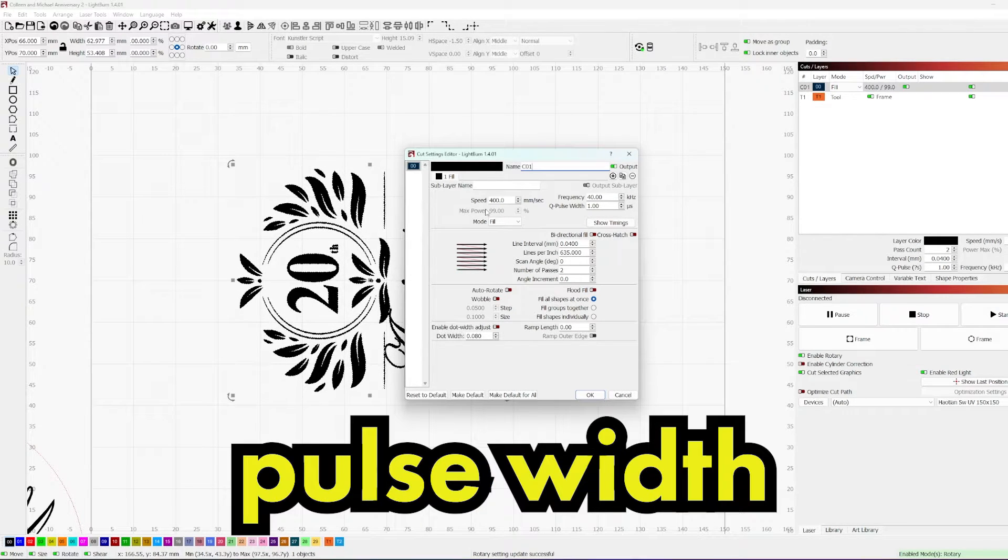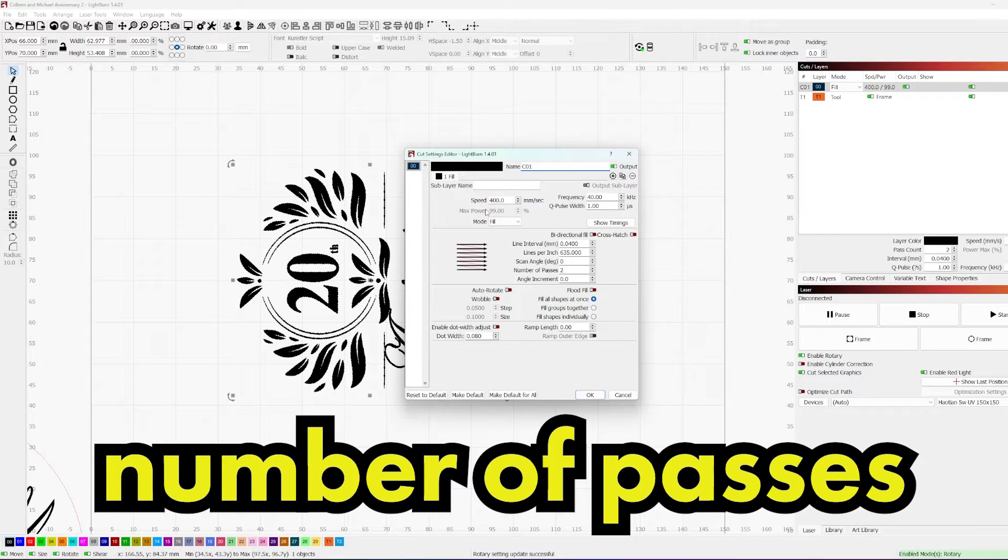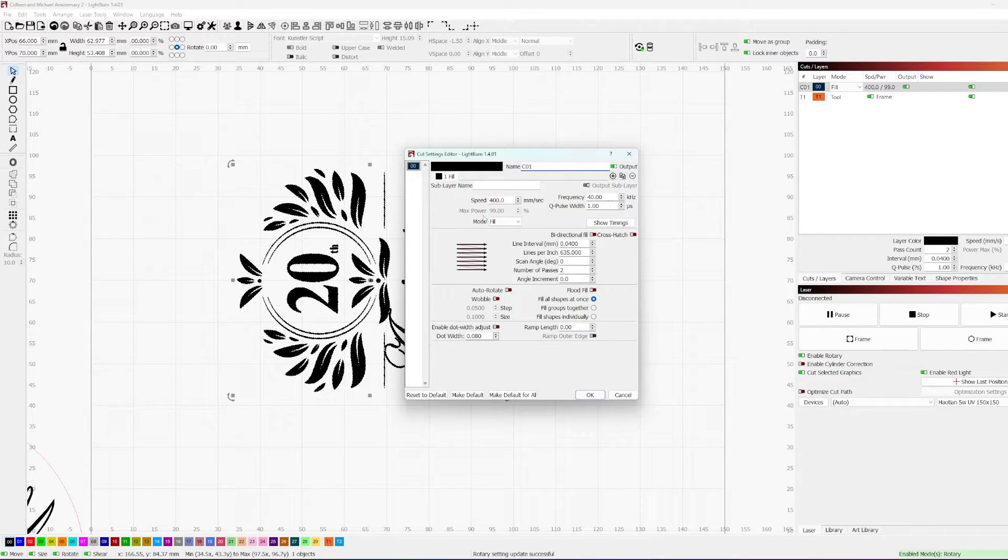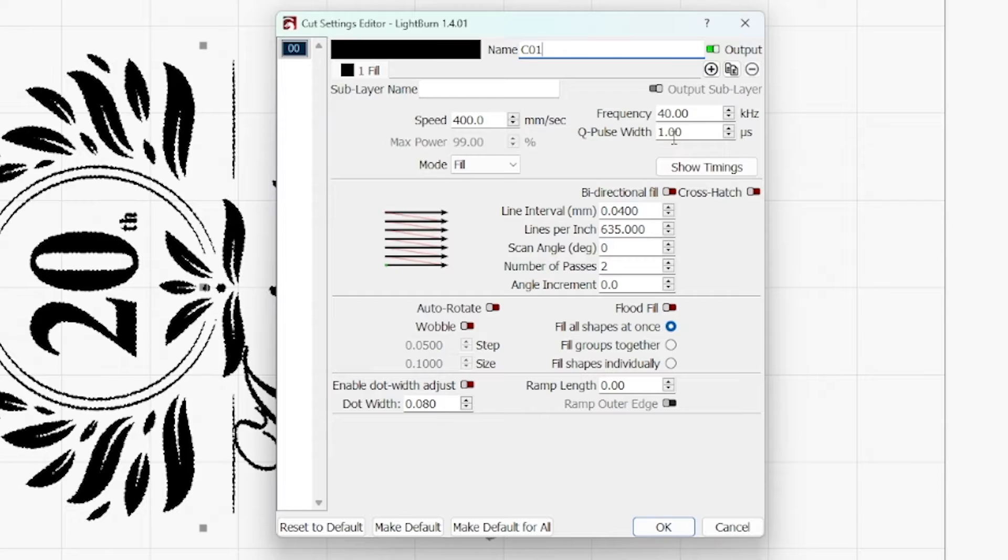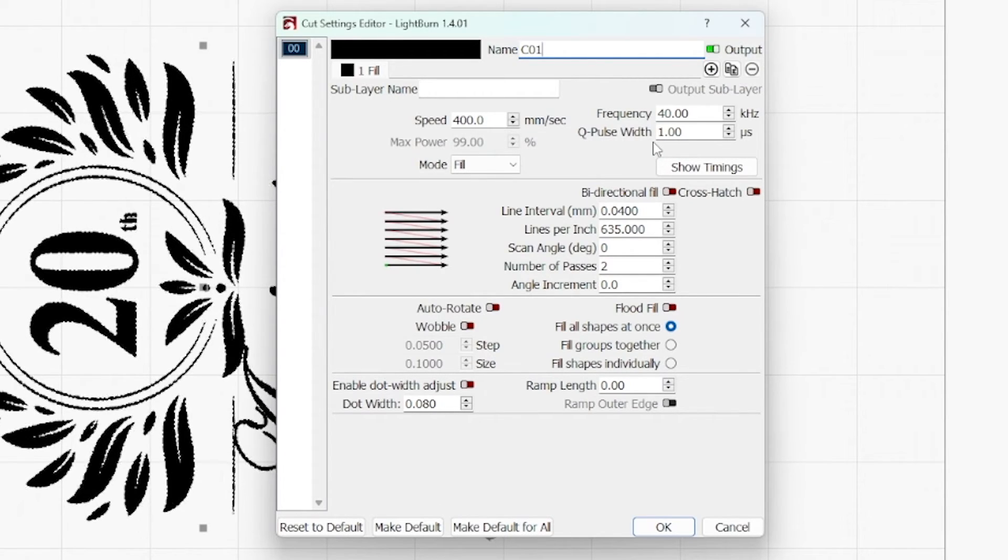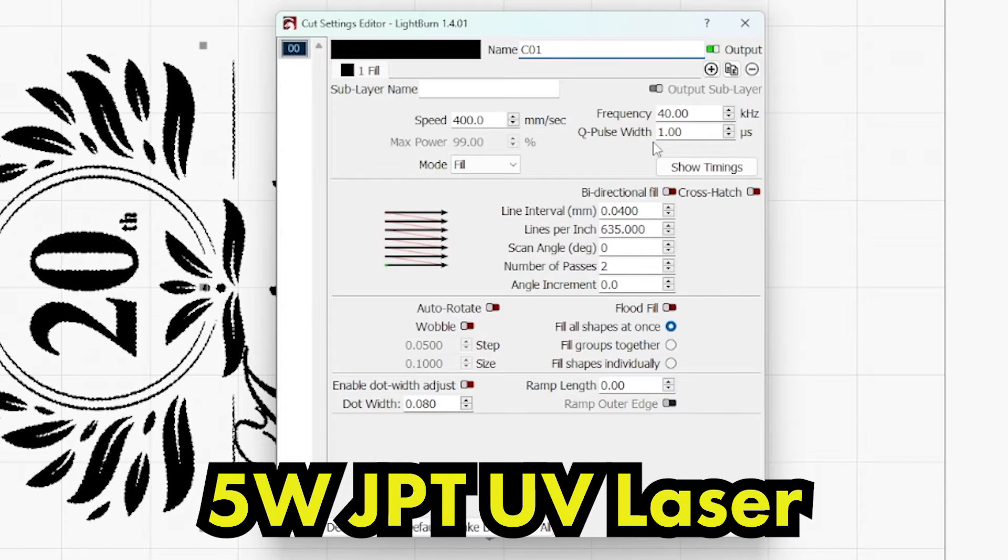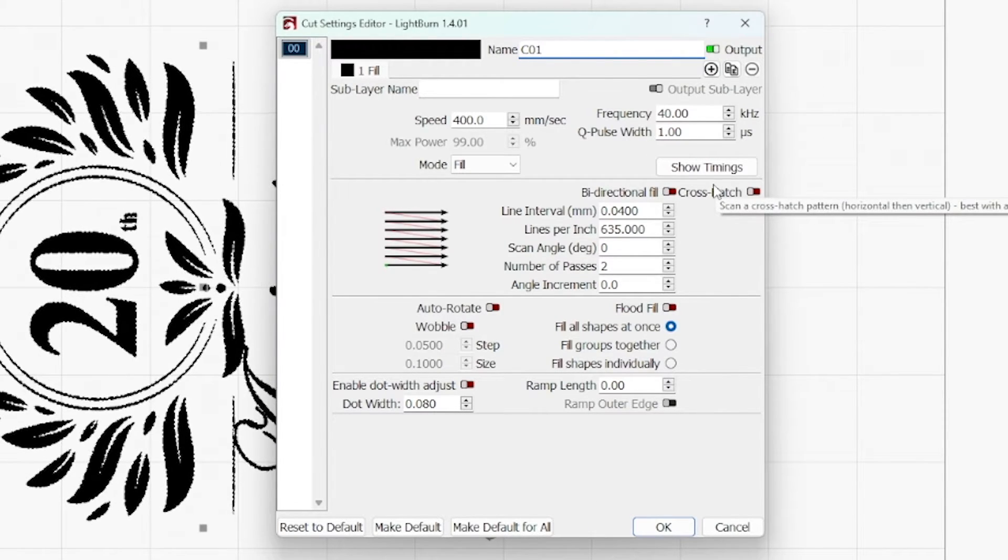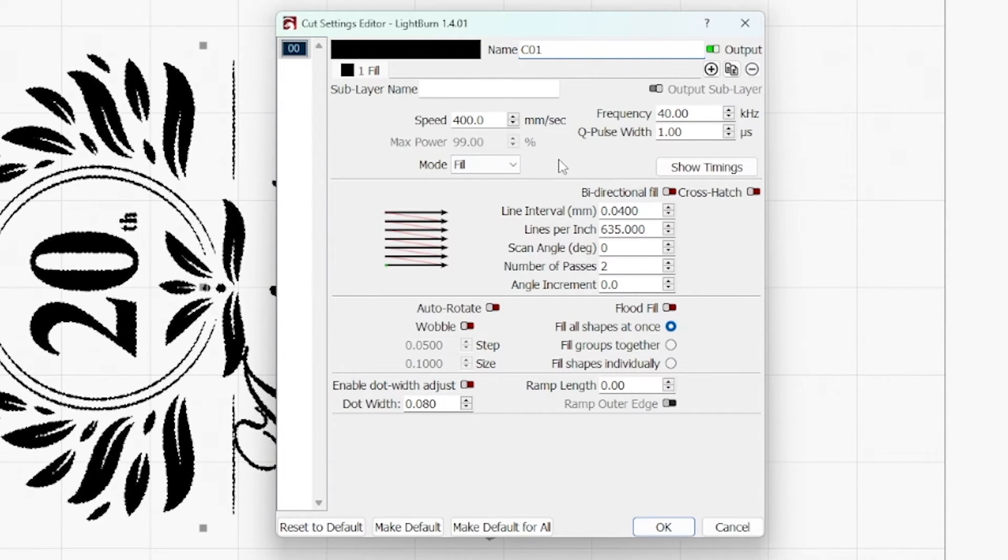It's all about speed, frequency, pulse width, your line interval, how many passes you're doing. Essentially, what you would expect on a fiber and a CO2, where you have power mixed in, that's not the case. But I run 400 speed, 40 frequency, and one Q pulse, and this is on a 5 watt JPT UV laser. Now, that is going to change, especially if your source and model change. So, this settings, more specifically, if you're using as a starting point, I would suggest only if you have a 5 watt JPT UV. 0.04 line interval, like I said. And if you do have your timings tuned in, bidirectional is perfectly fine. I'm running without it just to maximize quality and not risk the final product here.